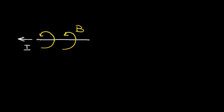If I stop the current, the magnetic field goes away — it stops. If I change the direction of the current, for example, if I run the current in this direction instead, the magnetic field will reverse and it will go in this direction.